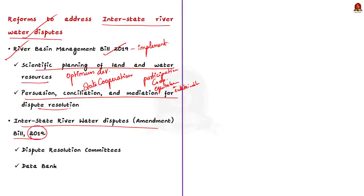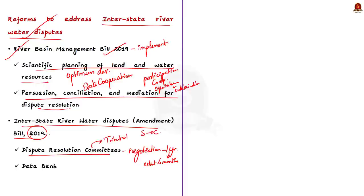Second, the Interstate River Water Disputes Amendment Bill 2019 should be implemented. Under this bill, it proposes the creation of Dispute Resolution Committees that will seek to resolve disputes through negotiations within one year, extendable up to six months. Only if disputes are not resolved by the committee will they be referred to the tribunal. The bill also plans to establish a data bank — the central government should maintain a data bank and information system at the national level for each river basin, which will help in river management and address disputes scientifically. There are also suggestions to create a single permanent national tribunal to simplify the dispute resolution process.